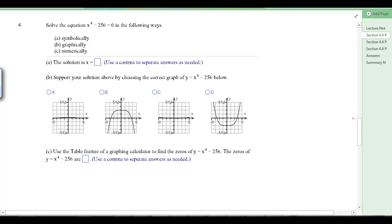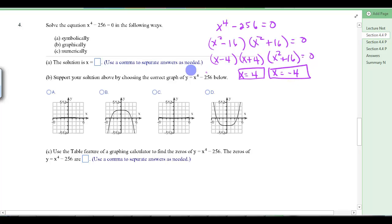Number 4. Solve this symbolically, graphically, numerically. So, we're going to take this and set this equal to 0. We're going to say x to the 4th minus 256 equals 0. That is the difference of two squares. That gives us x squared minus 16 times x squared plus 16 equals 0. Again, this is the difference of two squares. So, we have x minus 4 times x plus 4 times x squared plus 16. That doesn't factor anymore at all. That's going to give you some imaginary solutions. So, we have x equals 4 and x equals negative 4. So, those are our solutions symbolically.